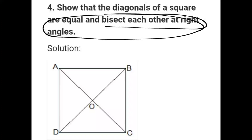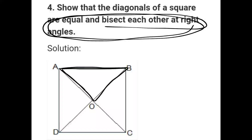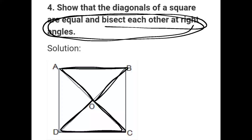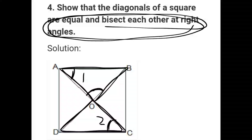Now, bisect at right angle — 90 degrees. We need to choose a small triangle. We choose triangle AOB and the other triangle COD. Now we need to match the angles. Angle 1 and angle 2 are vertically opposite angles. AB line equals CD because these are sides of the square.